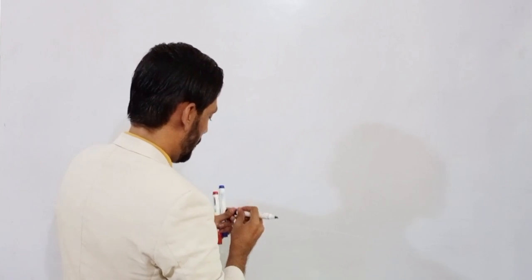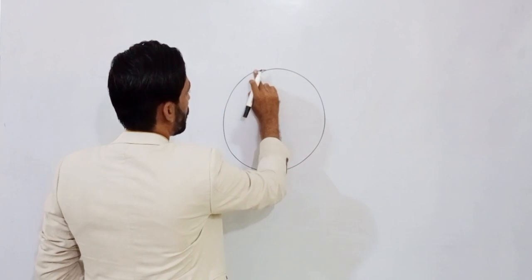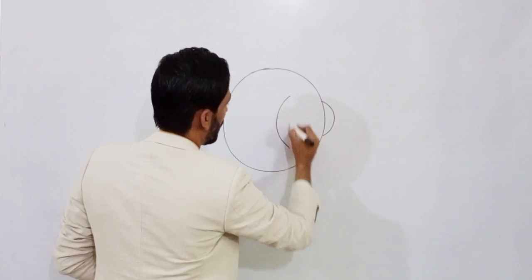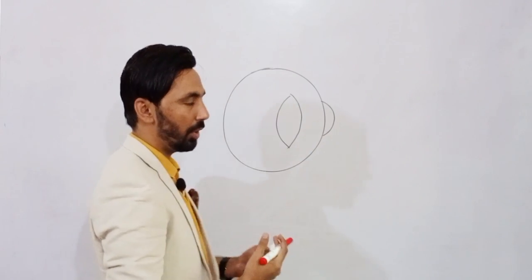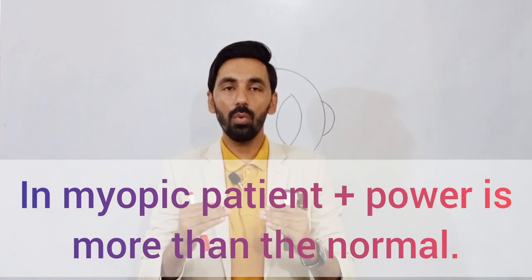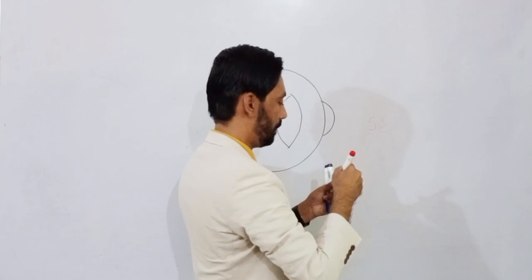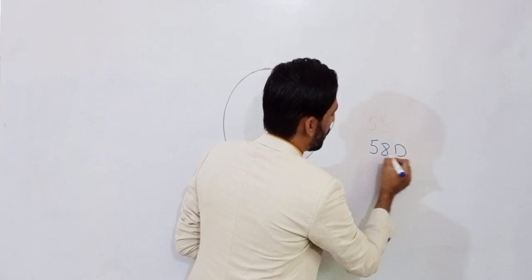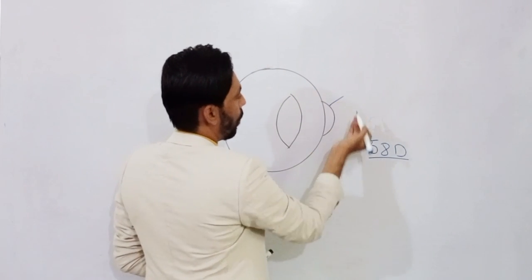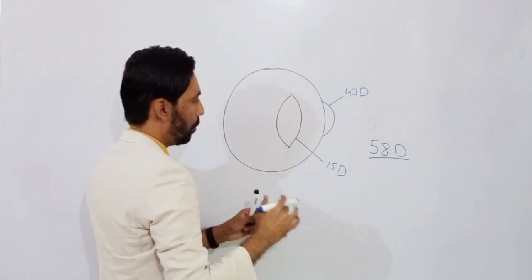To prove how this mistake occurs, suppose this is your eye — this is the cornea, this is the lens — and the patient is myopic. In a myopic patient, the plus power of the eye is more than normal. The normal total dioptric power of the eye is 58 diopters: cornea contributes 43 diopters and the lens contributes 15 diopters.